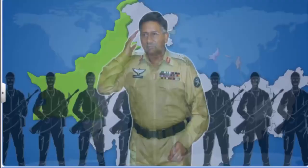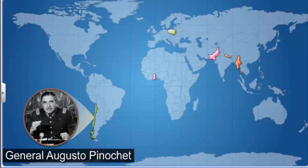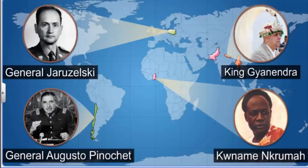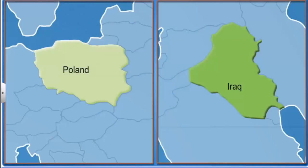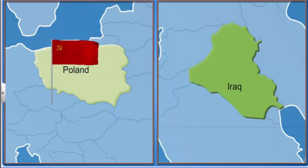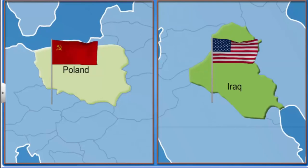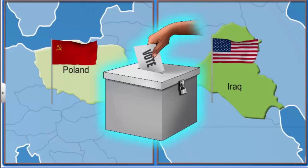Similarly, many dictatorships and monarchies have an elected parliament and government, with the real power vesting in people not elected. If you recall the power of the USSR in communist Poland and that of the US in contemporary Iraq — in these cases the real power vested with another country. These also cannot be regarded as people's rule or democracies.